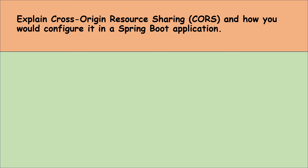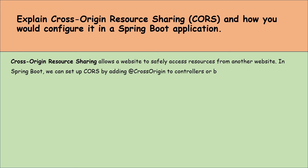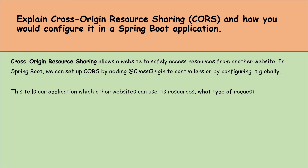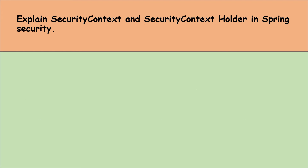Explain cross-origin resource sharing and how you would configure it in a Spring Boot application. Cross-origin resource sharing allows a website to safely access resources from another website. In Spring Boot, we can set up CORS by adding the @CrossOrigin annotation to controllers or by configuring it globally. This tells our application which other websites can use its resources, what type of requests they can make, and what headers they can use, keeping it secure while allowing communication across different web domains.